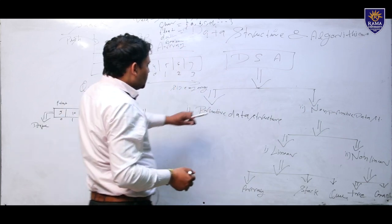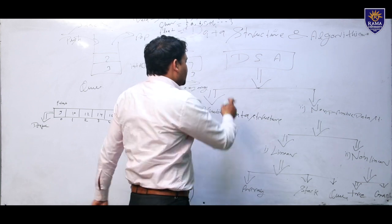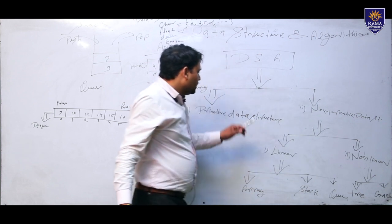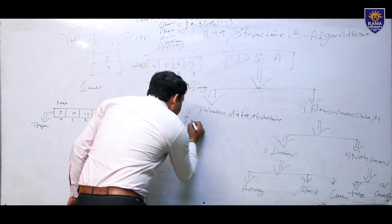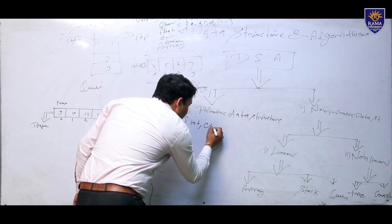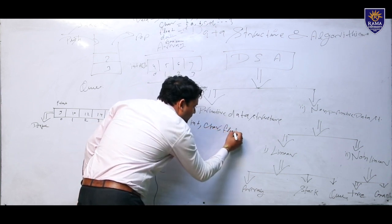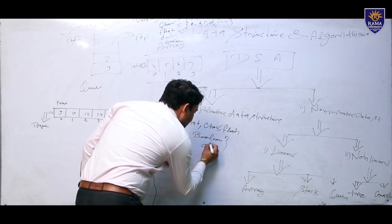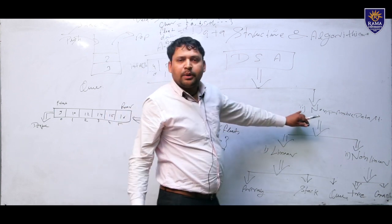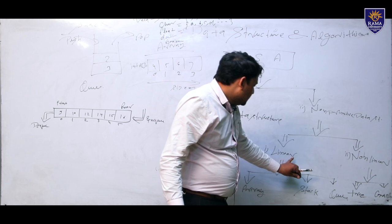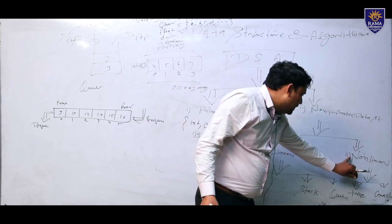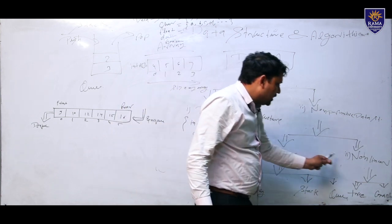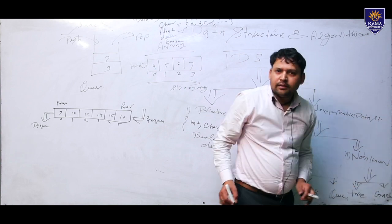DSA, data structure and algorithm, is basically divided into two types: primitive data structure and non-primitive data structure. Primitive means integers, character, float, boolean and double. Non-primitive data structures are divided into linear and nonlinear. Linear means array, stack and queue. Nonlinear means tree and graph.